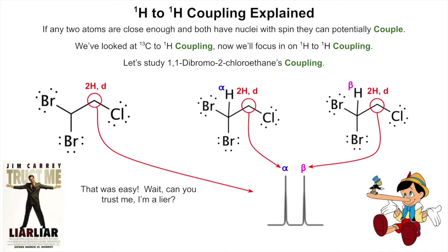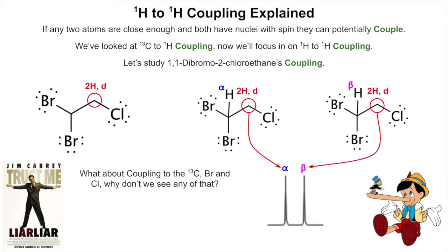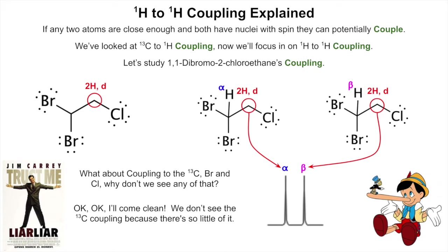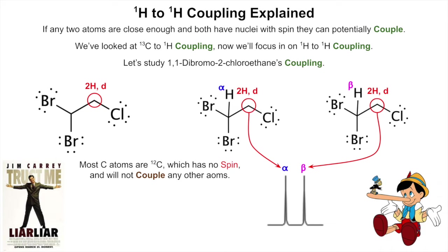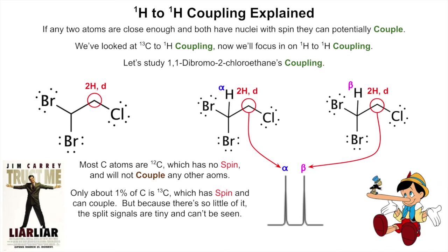One neighbor, n+1 rule, doublet — done. Now, you might ask: what about coupling to the carbon-13 atoms and the bromines and chlorines in the molecule? We don't see carbon-13 coupling because there's so little of it. Most carbons are carbon-12 — about 98% of carbon atoms are carbon-12, and carbon-12 has no spin and no spin states, so it will not couple with any other atoms. Only about 1% of carbons are carbon-13, which has spin.